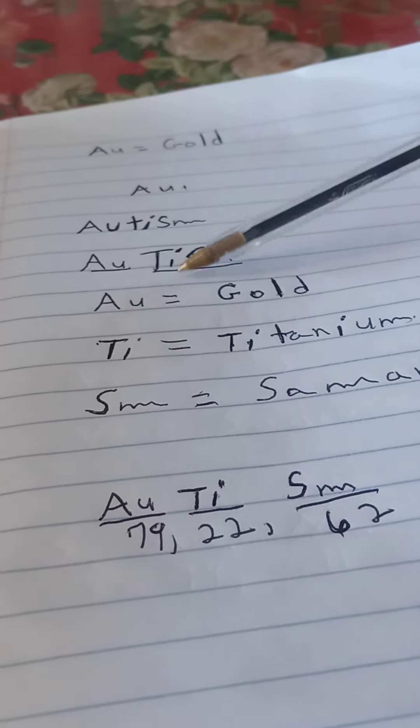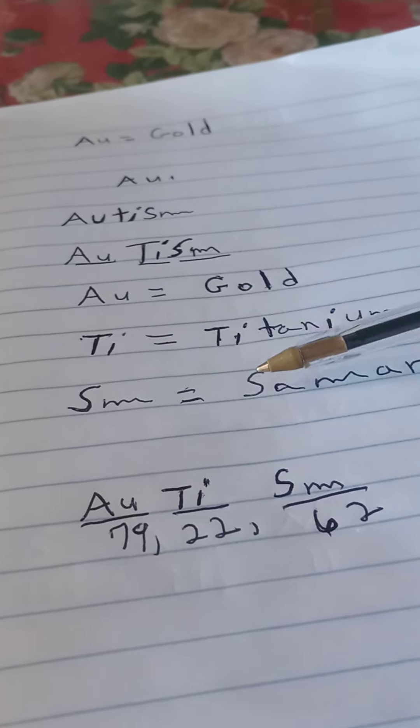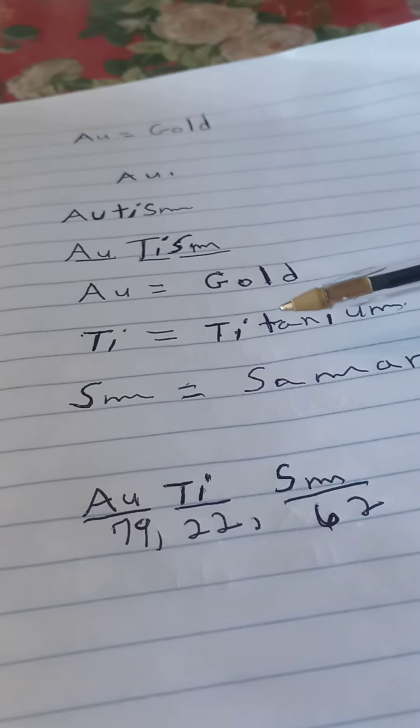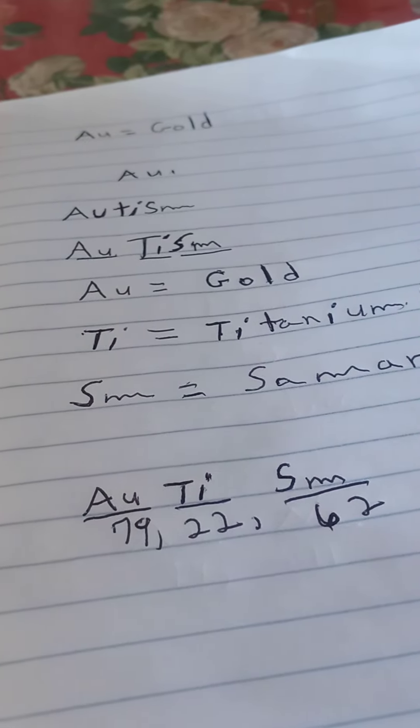Then you got capital T and a small i, and that's for titanium. Capital T-I-T-A-N-I-U-M.